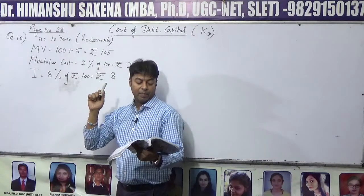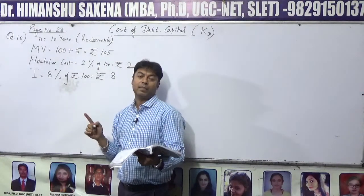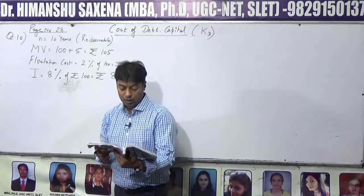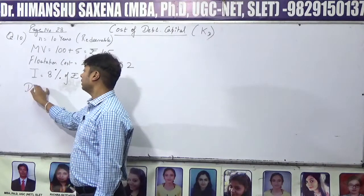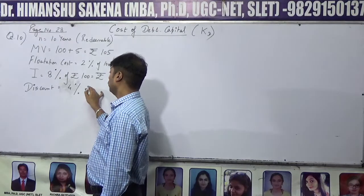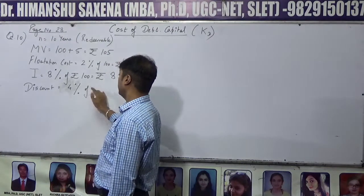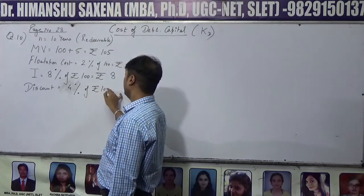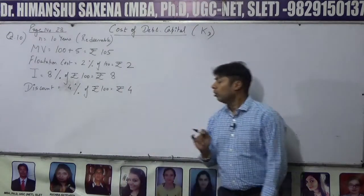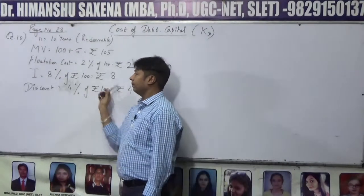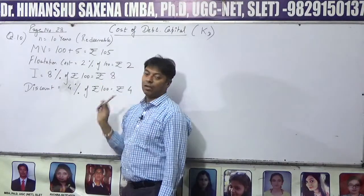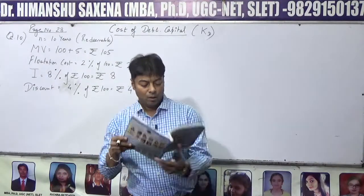पहली line में लिखा है: Shri Limited issued 8% debentures at 4% discount. Discount है 4%, तो 4% of ₹100 = ₹4. तो हमारे पास discount = ₹4 है।